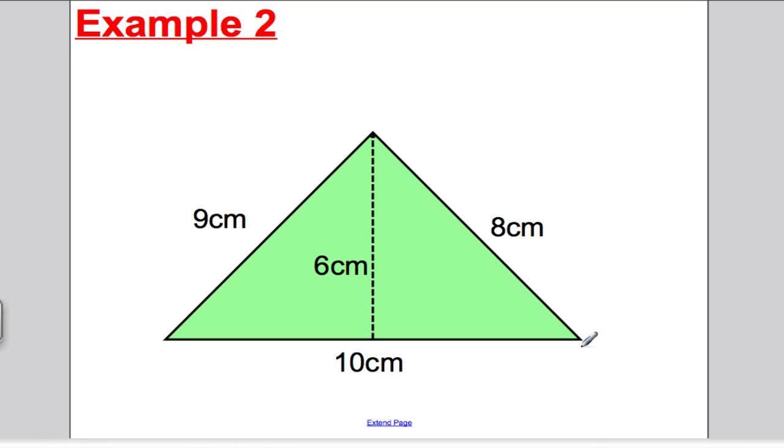Here's another quick example. What's the area of this here? Well, don't get confused by the 9 and the 8 if we're working out area. You just want the perpendicular height, which is here. So again, the area is base, which is 10, times perpendicular height, which is 6, divided by 2. And you get 30 centimetres squared. Simple as that.